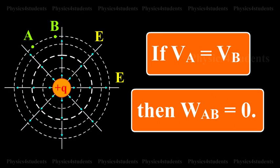If VA is equal to VB, then WAB is equal to zero.